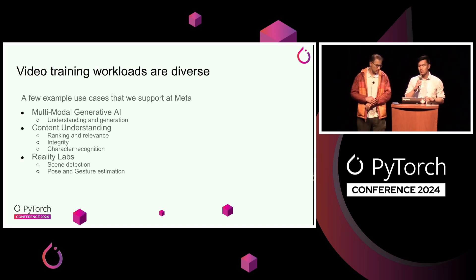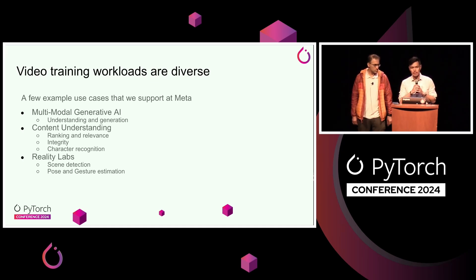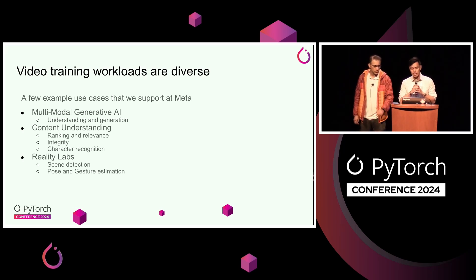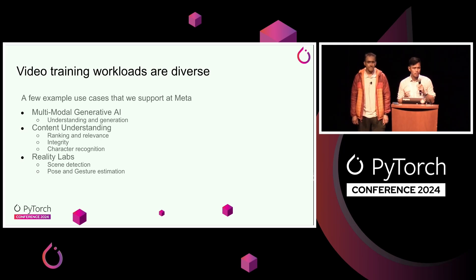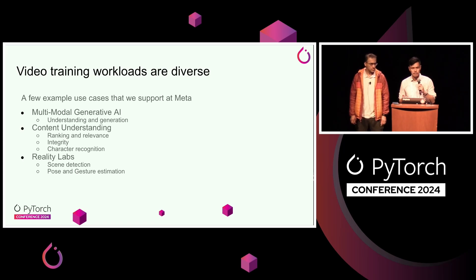Video data loading is pretty diverse. You could be doing something like generative AI where you're trying to generate very high resolution video — you need very high spatial resolutions like 4K and very high temporal resolutions. Or you might be doing something like content understanding where the resolution doesn't need to be very high, but things like randomness are extremely important for, say, an integrity use case.